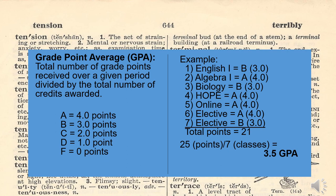GPA, or grade point average, is extremely important. Your GPA has either already started if you're currently taking Algebra 1 or Geometry, but for most of you, your GPA will start next year when you begin ninth grade. This is the total of all grade points received over a given period divided by the total number of credits awarded. Look to your right to see the example. This is a typical ninth grade core schedule — a student enrolled in seven classes earning grades such as a B in English, an A in Algebra 1, a B in Physical Science, an A in Hope PE, an A in their online class, and an A and a B in their electives. The total points equal 21, divided by 7 classes, giving a GPA of 3.0. Your GPA is extremely important because it will open up opportunities through dual enrollment and clubs.